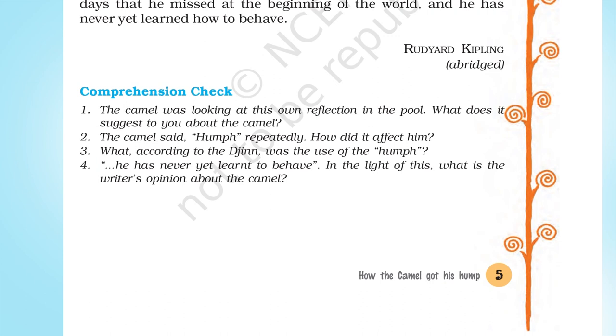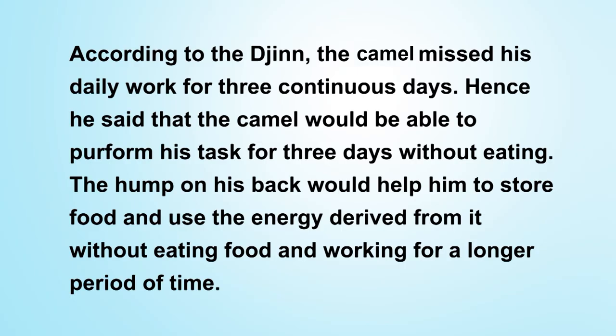I hope you have got the complete gist of the analysis of the text for the first unit. Let us now go through the comprehension check at the end of part two. Questions one, two, and four are left for you to think over and write down. I'll be discussing question number three and the answer for it. The question is: what, according to the Jinn, was the use of the hump? Answer: according to the Jinn, the camel missed his daily work for three continuous days. Hence, he said that the camel would be able to perform his task for three days without eating, because the hump on his back would help him store food and use the energy derived from it without eating food, and work for a longer period of time.